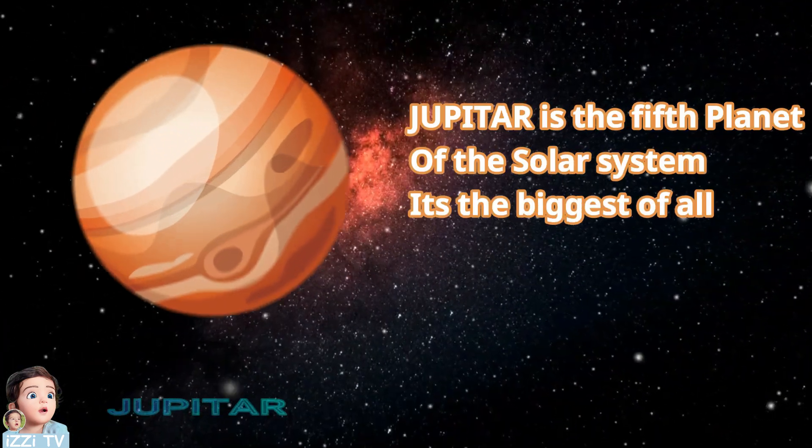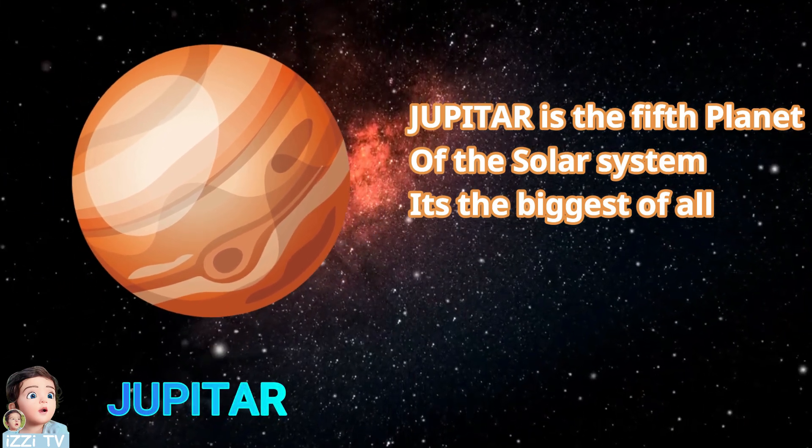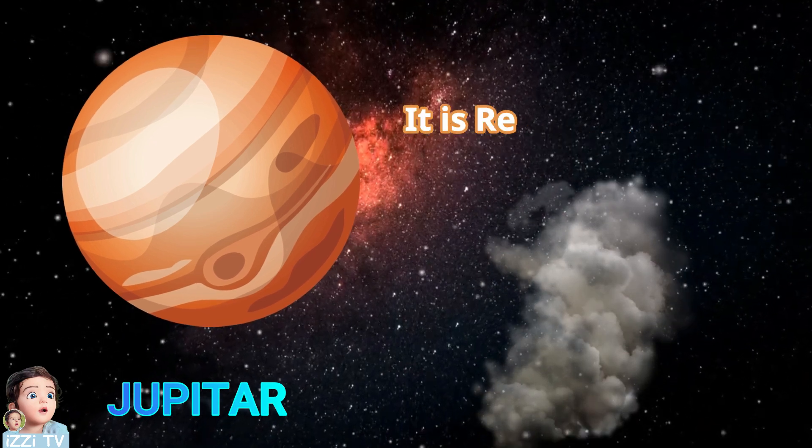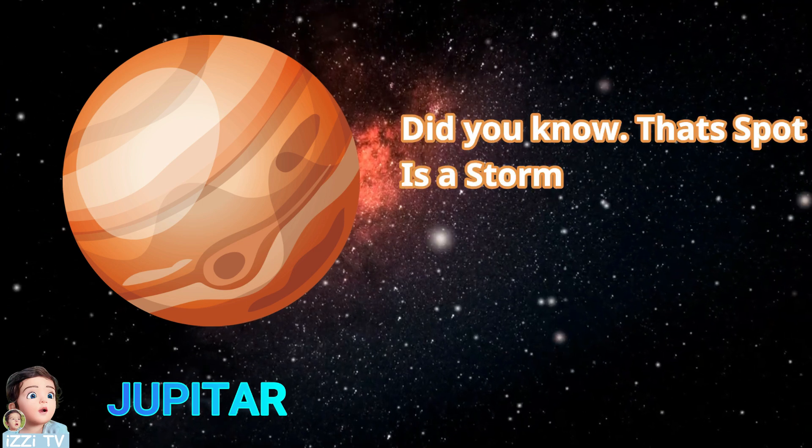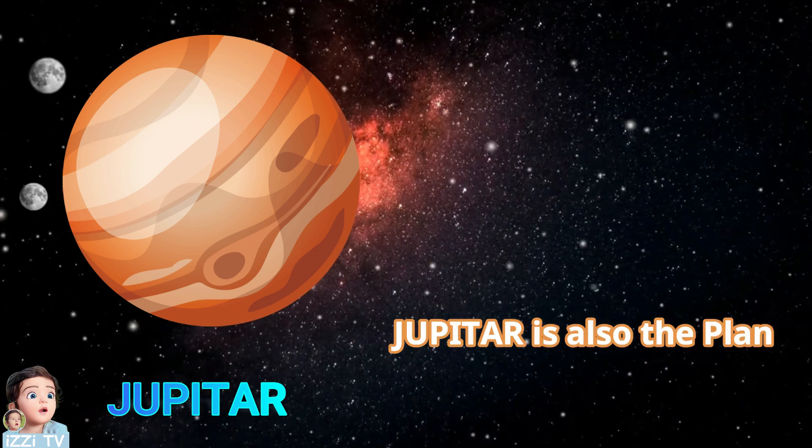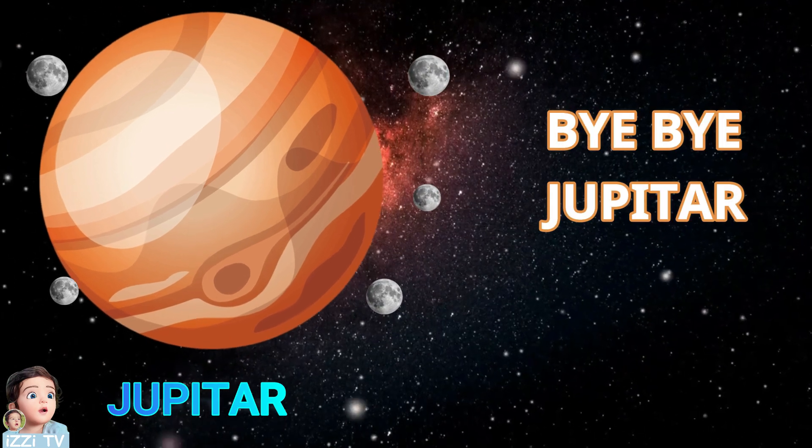Jupiter is the fifth planet of the solar system. It's the biggest of all and it's made of gas. It is red and has a huge brown spot. Did you know that spot is a storm? Jupiter is also the planet with more moons of all. Bye bye Jupiter!